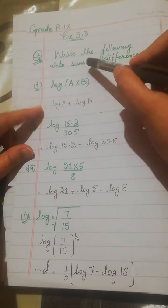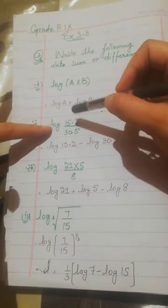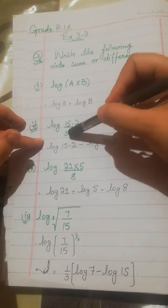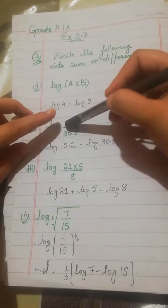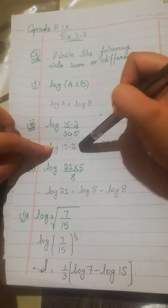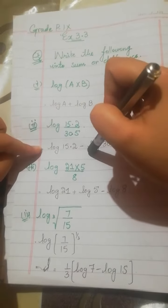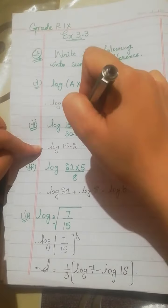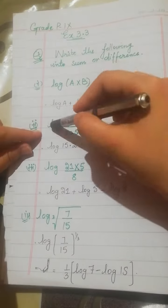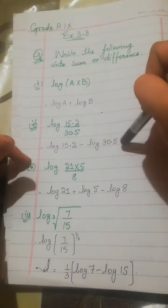Simple, sum or differences. In this way, 15.2 over 30.5, when log is applied to division, it will change to minus. So log 15.2 minus log 30.5.